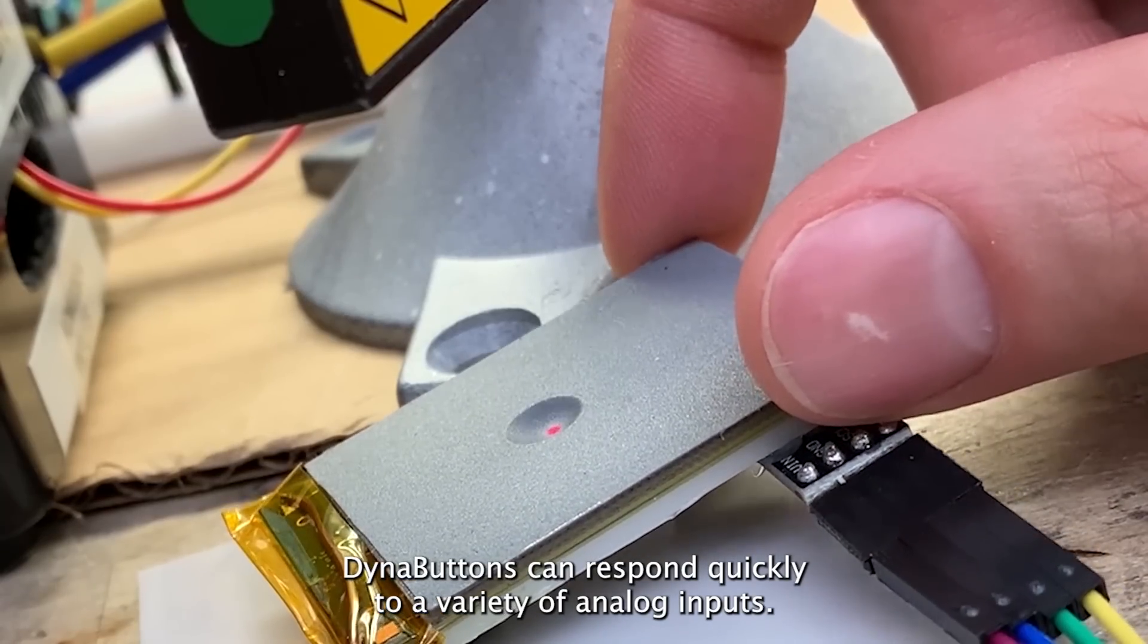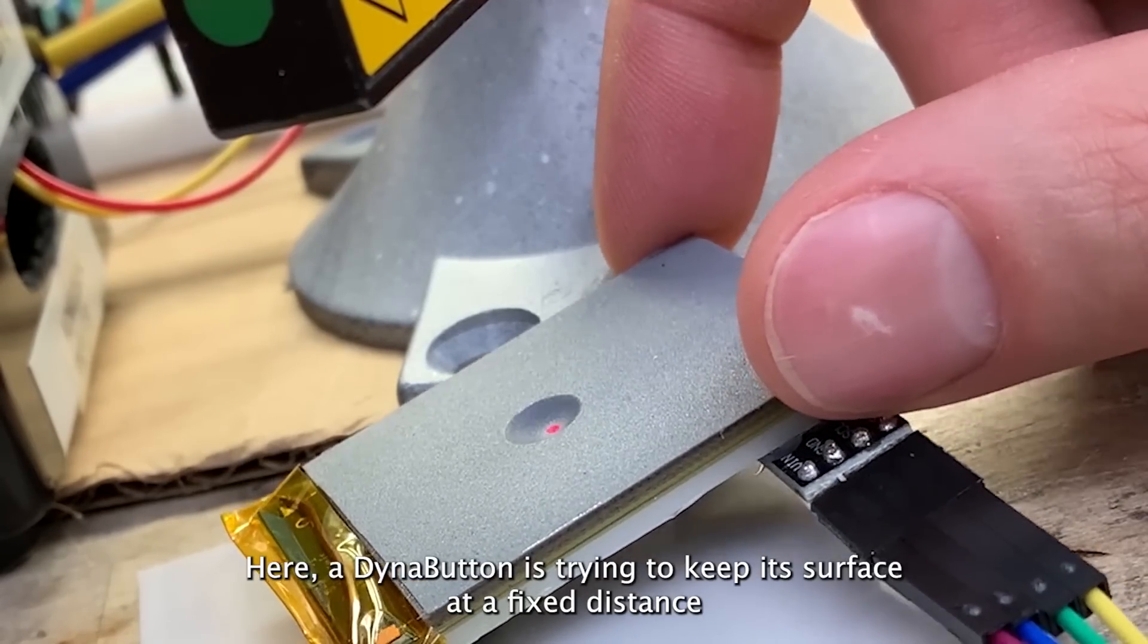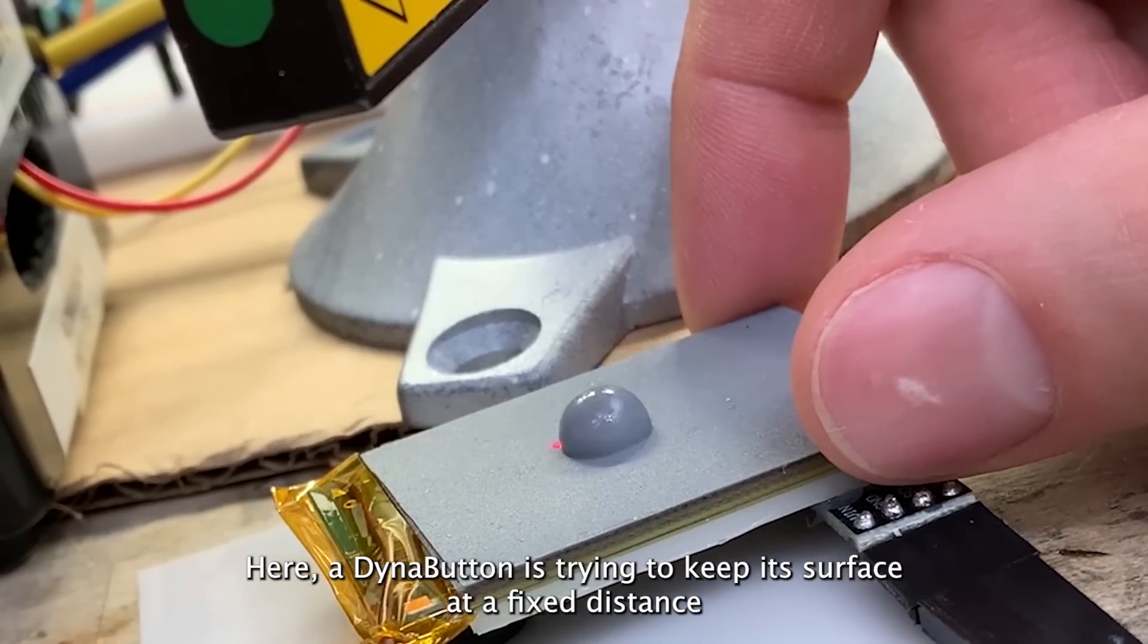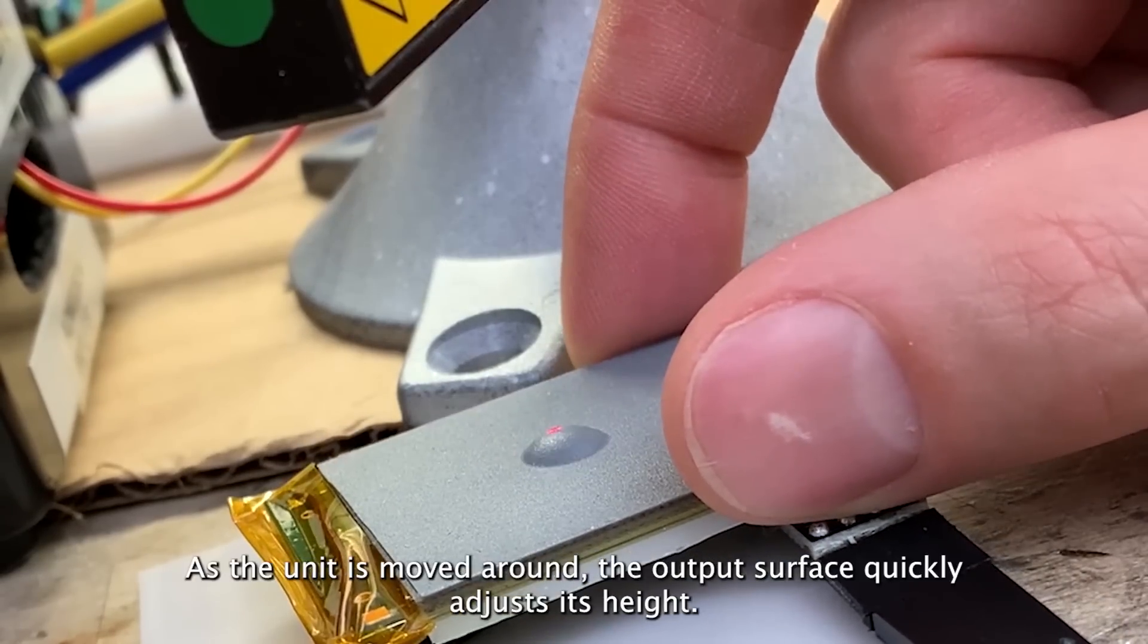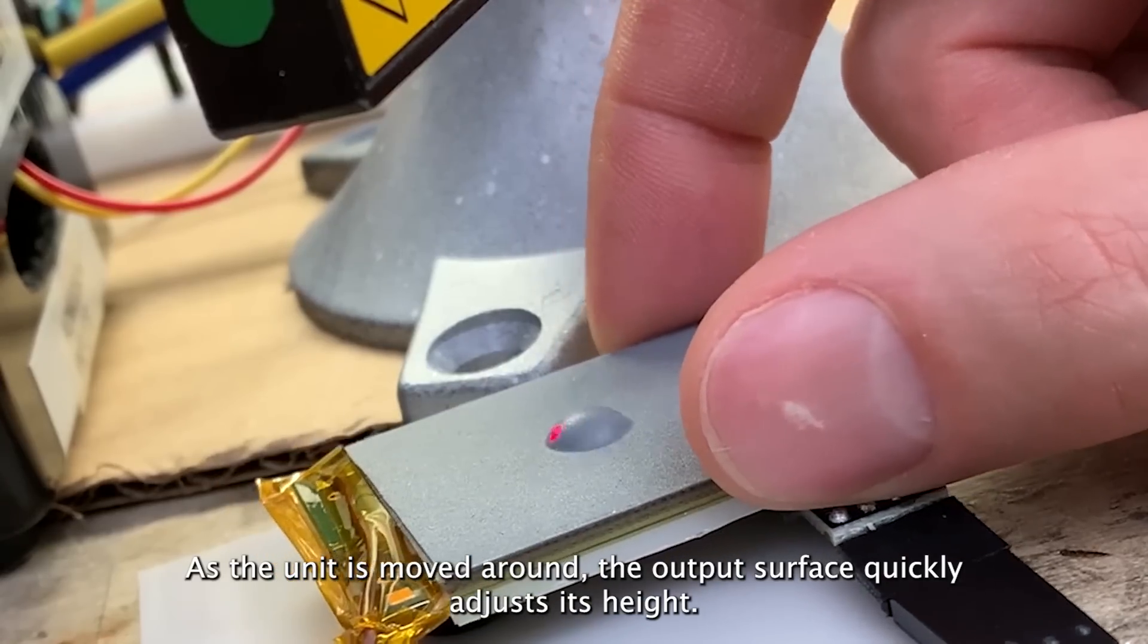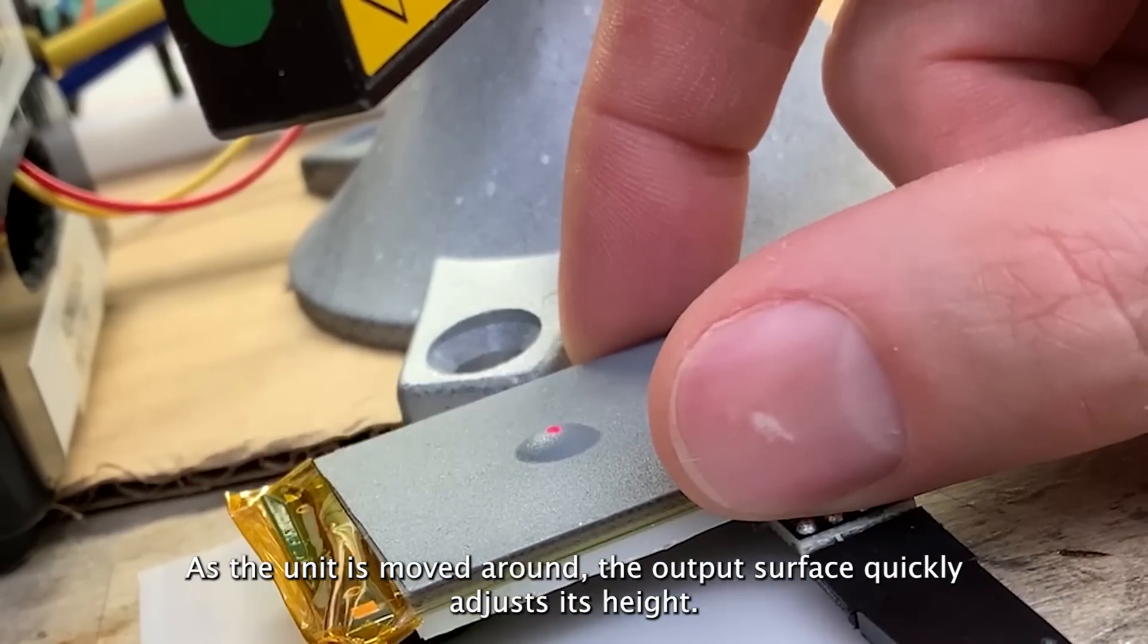DynaButtons can respond quickly to a variety of analog inputs. Here, a DynaButton is trying to keep its surface at a fixed distance from an external laser distance sensor mounted above. As the unit is moved around, the output surface quickly adjusts its height.